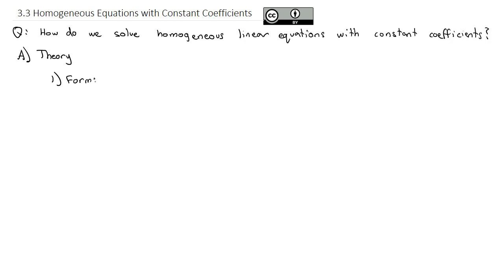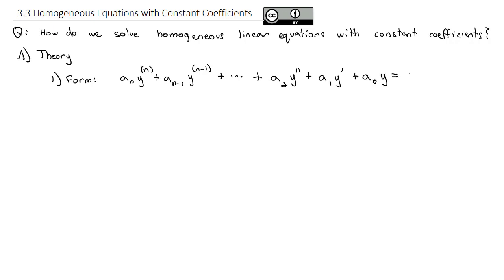What we're really doing is solving equations of the form: some constant times the nth derivative of y, plus another constant times the next derivative of y, and so on down to the second constant times the second derivative, plus the first constant times the first derivative, plus some constant times y itself. It's equal to zero because we're working with homogeneous linear equations, and the key is that all of those coefficients — a_n, a_{n-1}, down to a_2, a_1, and a_0 — are constants, just numbers.